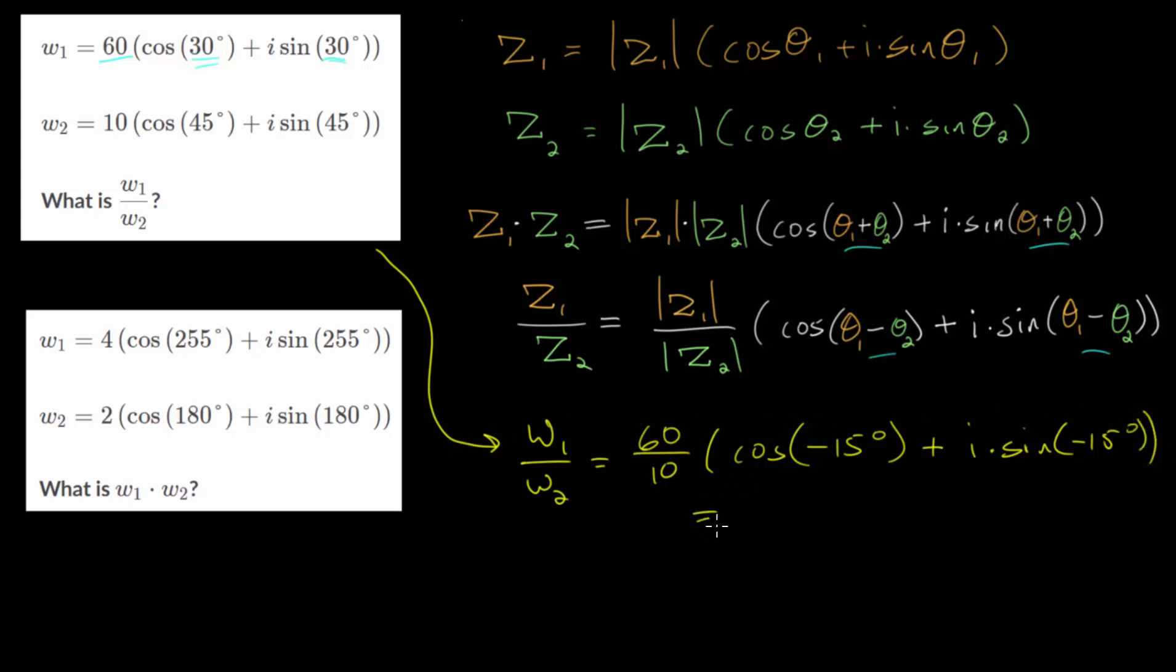We can simplify this. The new magnitude would be 6, and the new direction, the new angle of this quotient would be negative 15 degrees. And again, that's measured relative to the positive real number axis.